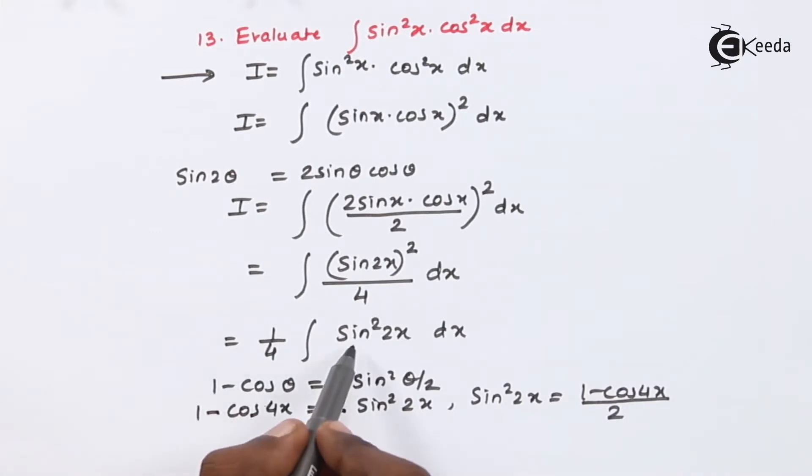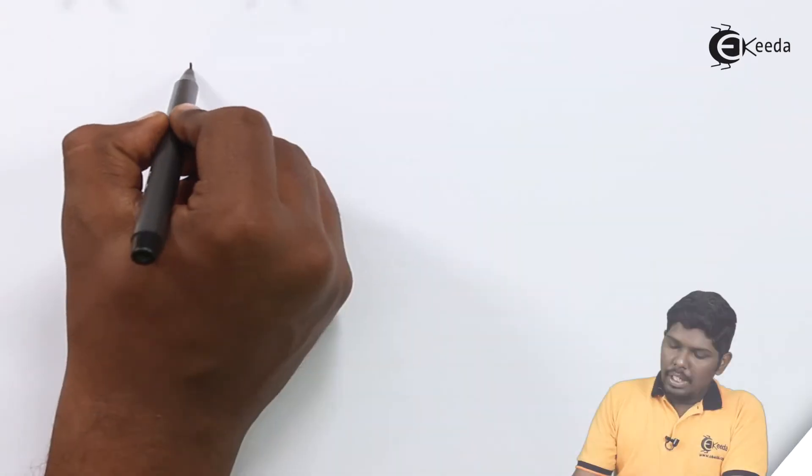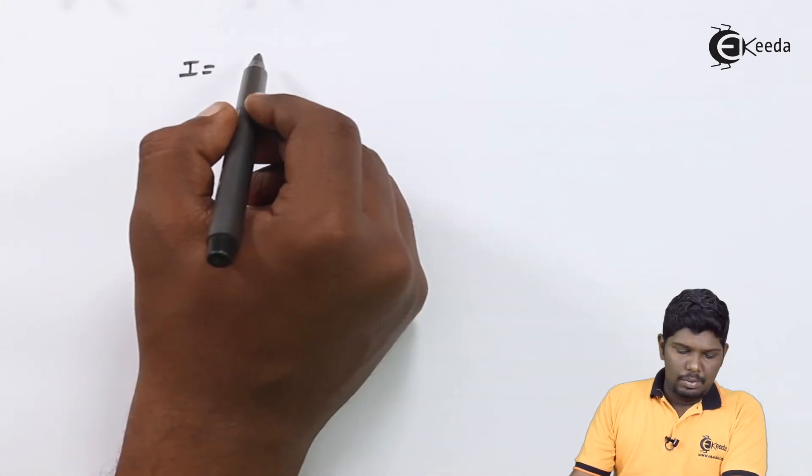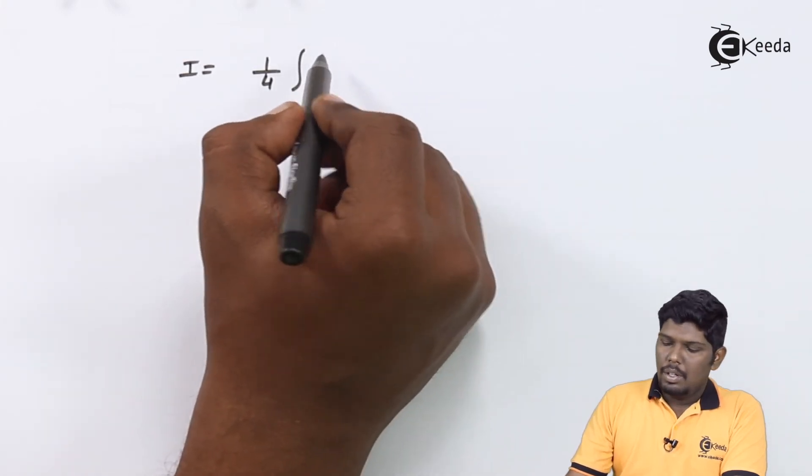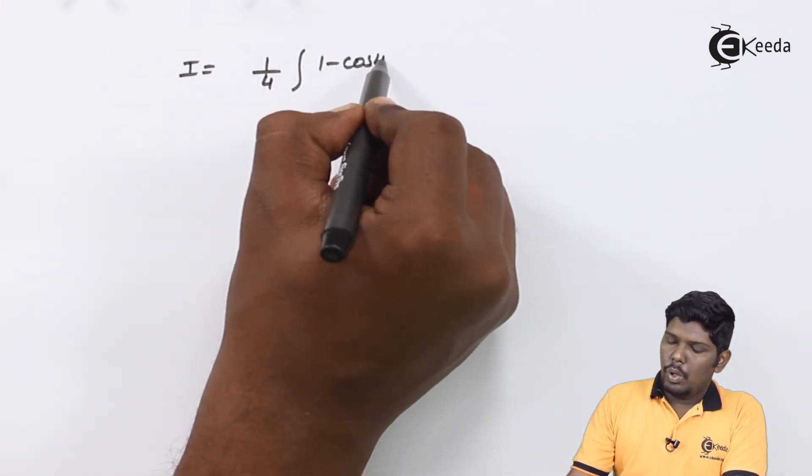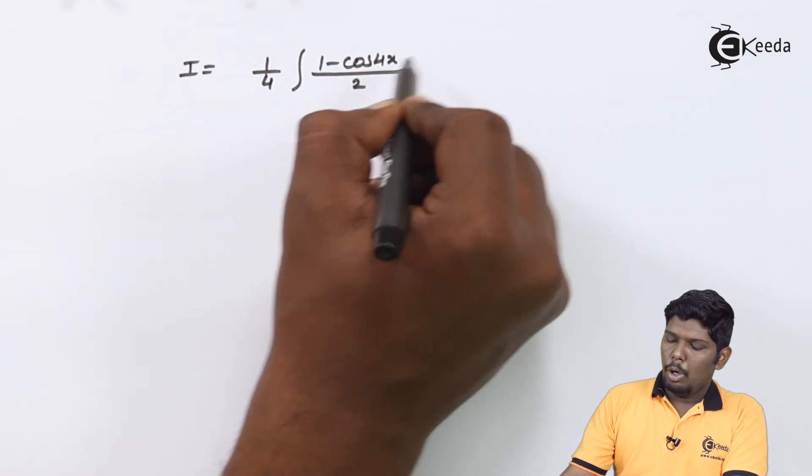Let us substitute this value in the integral. This will give you 1/4 ∫(1 - cos 4x)/2 dx.